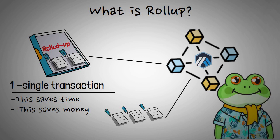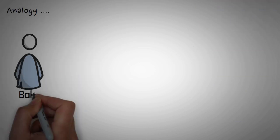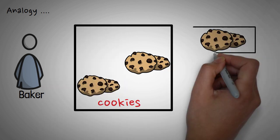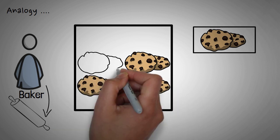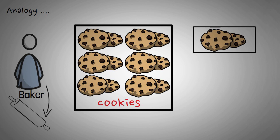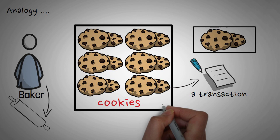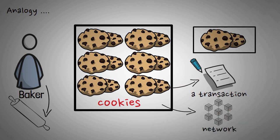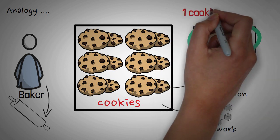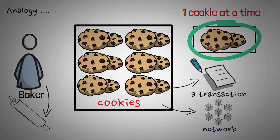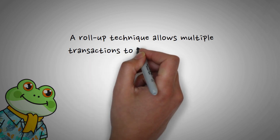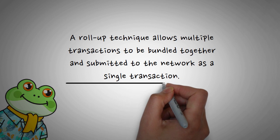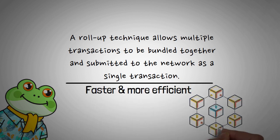If this is still confusing, let's use an analogy. Think of the rollup technique as a baker who needs to make a large batch of cookies. Instead of making one cookie at a time, the baker uses a rolling pin to make a long sheet of cookie dough, then cuts the sheet into smaller pieces and bakes them all at once. Each piece of dough represents a transaction, and the oven is the network processing them. The traditional way is like baking one cookie at a time — slow and inefficient. But with the rollup technique, you make a large batch at once, which speeds up the process significantly. In essence, a rollup bundles multiple transactions together and submits them as a single transaction, making the process faster and more efficient while still maintaining the integrity and security of the blockchain.